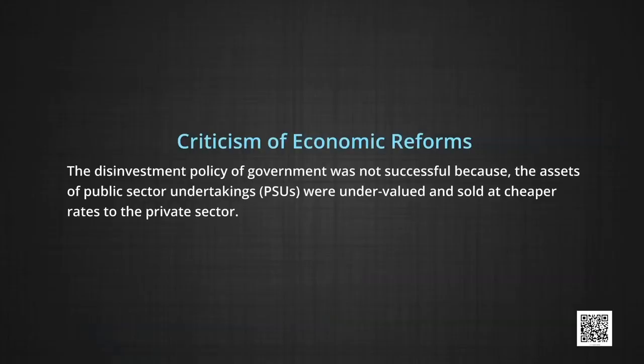Besides, infrastructure facilities including power supply have remained inadequate due to lack of investment. All quota restrictions on exports of textiles and clothing have been removed from India, but some developed countries like the United States of America have not removed their quota restrictions on imports of textiles from India. The disinvestment policy of the government was not successful because the assets of public sector undertakings were undervalued and sold at cheaper rates to the private sector. Moreover, such proceeds from disinvestments were used to compensate shortages of government revenues rather than for the development of public sector units and building social infrastructure.